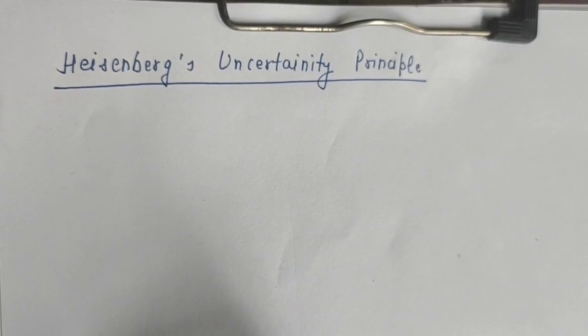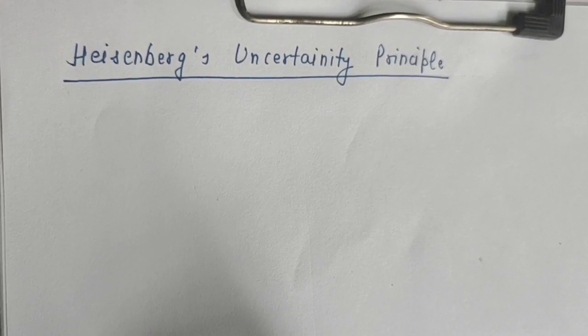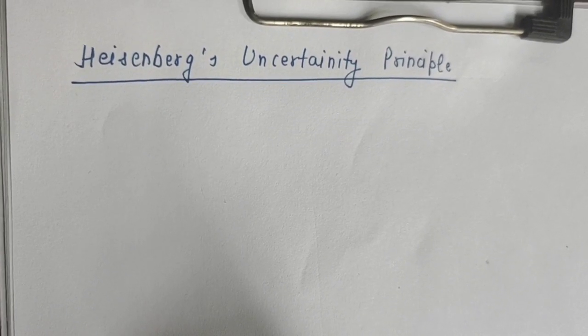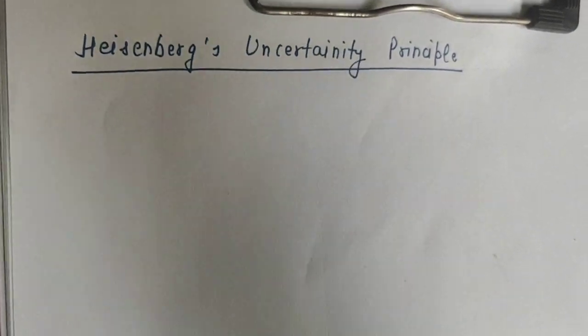Hello everyone, today we are going to discuss Heisenberg's Uncertainty Principle. This principle was given by Heisenberg in 1927.